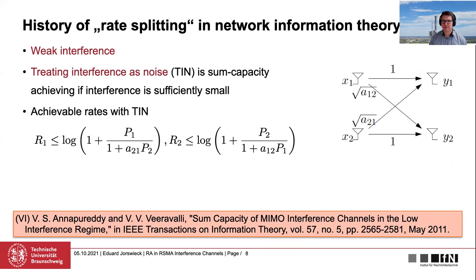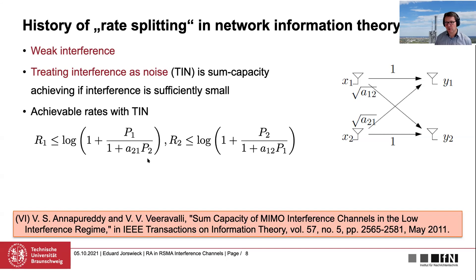For weak interference, a good strategy is to treat interference simply as noise: apply a point-to-point code and the receiver decodes its own data treating interference as noise. The achievable rate with TIN gives R1 less than log(1 + SINR), where SINR is signal power divided by 1 plus interfering power. If interference is sufficiently weak, the sum capacity of the interference channel is achieved with treating interference as noise.